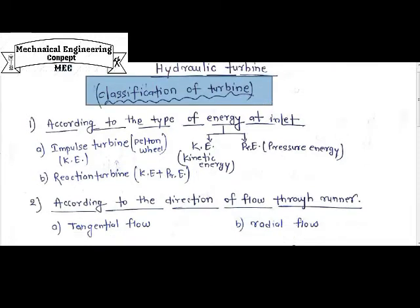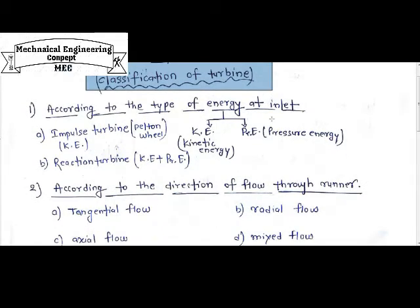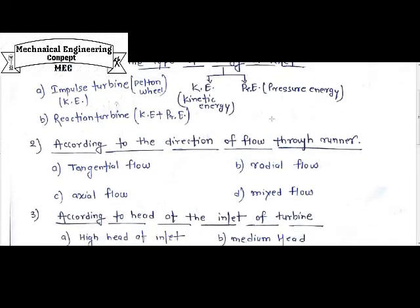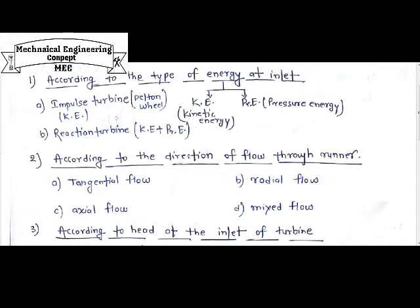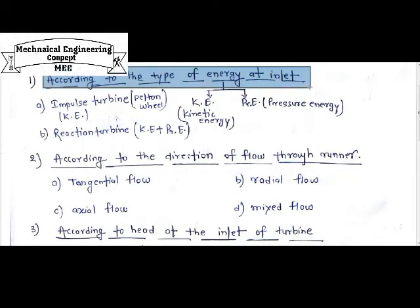A hydraulic turbine can be categorized according to four different types. The first one is according to the type of energy at the inlet — meaning the energy which is entering into the turbine. On the basis of that, you can categorize the turbine.